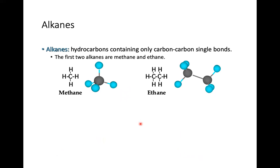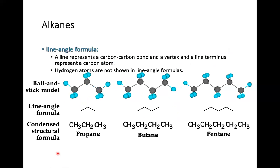The first two alkanes are methane and ethane. Methane has four hydrogens, so its formula is CH4. Ethane has two carbons and six hydrogens, so its formula is C2H6. Going back to methane, it is CH4.